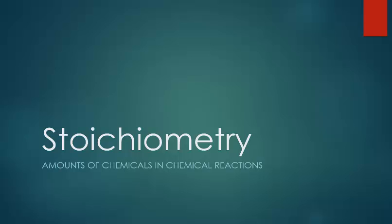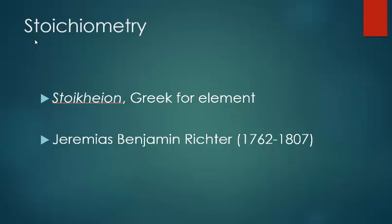Stoichiometry is the study of the amounts of chemicals in chemical reactions. It's a funny word, and it was coined by the German chemist Jeremias Benjamin Richter. It was first published in 1792, and the term has just stuck with chemists.